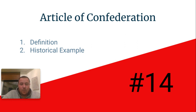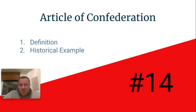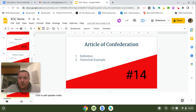But again, the people wanted a weak national government because they felt like the strong national government under the British monarchy was taking away their individual rights and freedoms. So the Articles of Confederation really only lasted from about 1781 to 1787 — less than 10 years. Rough go for the Articles of Confederation.